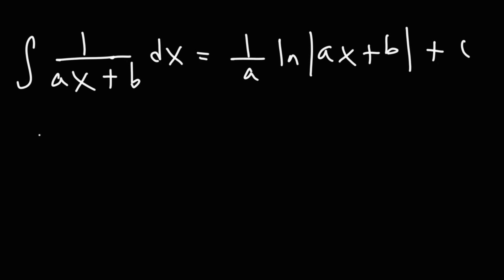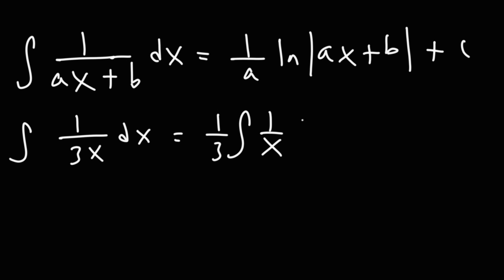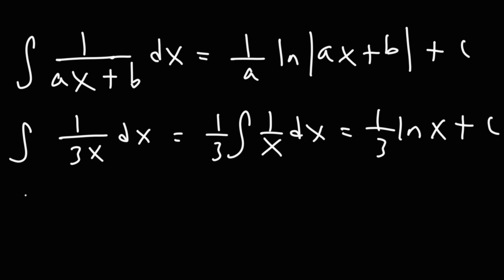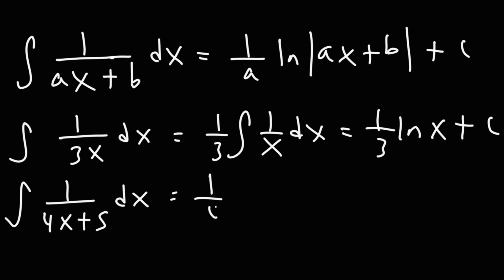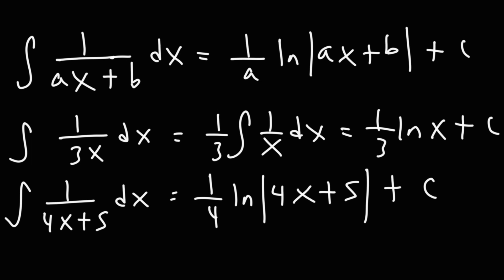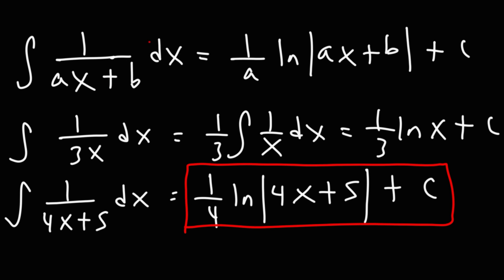For 1 over 3x, you can move the 3 out front to get one-third ln x plus c. For 1 over 4x plus 5, use the formula with a equal to 4: the result is one-fourth ln of 4x plus 5, plus c.